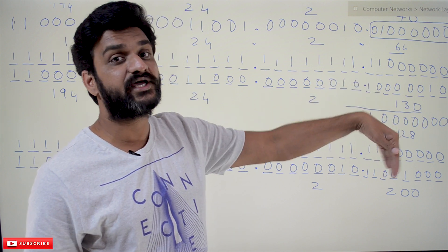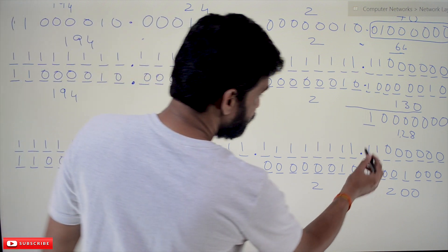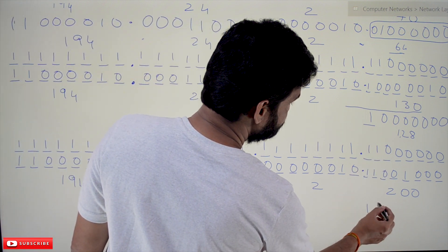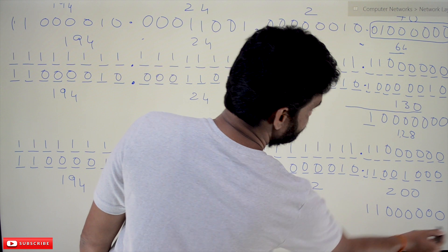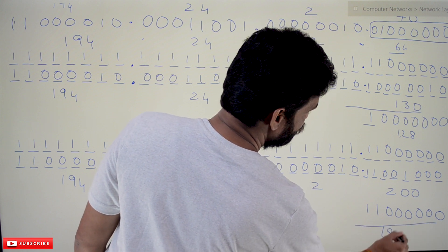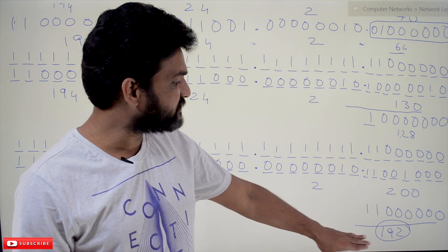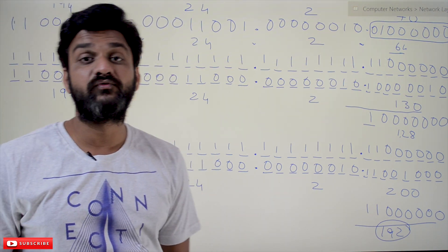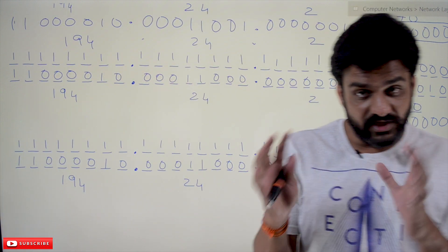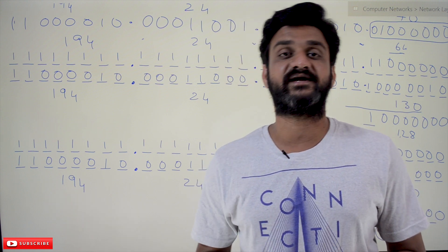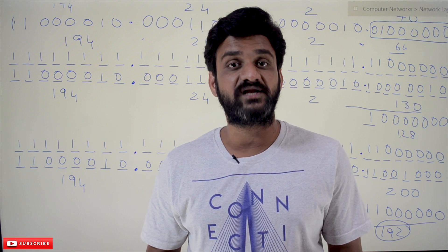Similarly, for the third message with destination 194.24.2.200: the last octet 200 in binary is 1 1 0 0 1 0 0 0. ANDing with subnet mask last octet 128 (1 0 0 0 0 0 0 0) gives 1 1 0 0 0 0 0 0, which is 192. So the network ID is 194.24.2.192. This is how the router decides through which interface the packet has to be transmitted. Hope you got clarity on this concept.